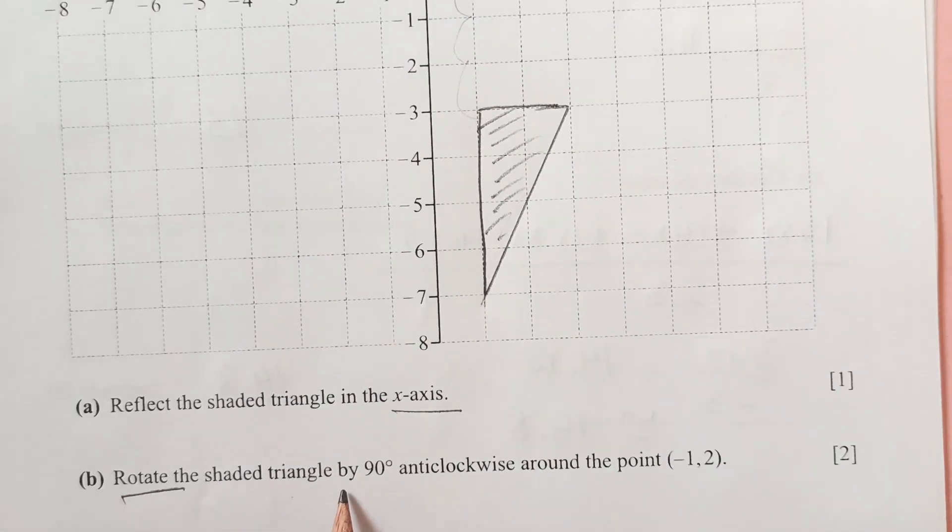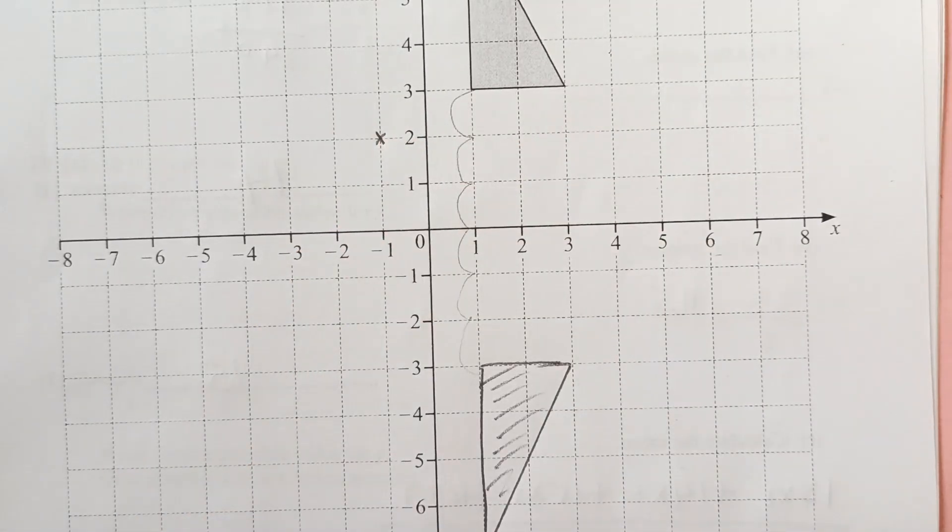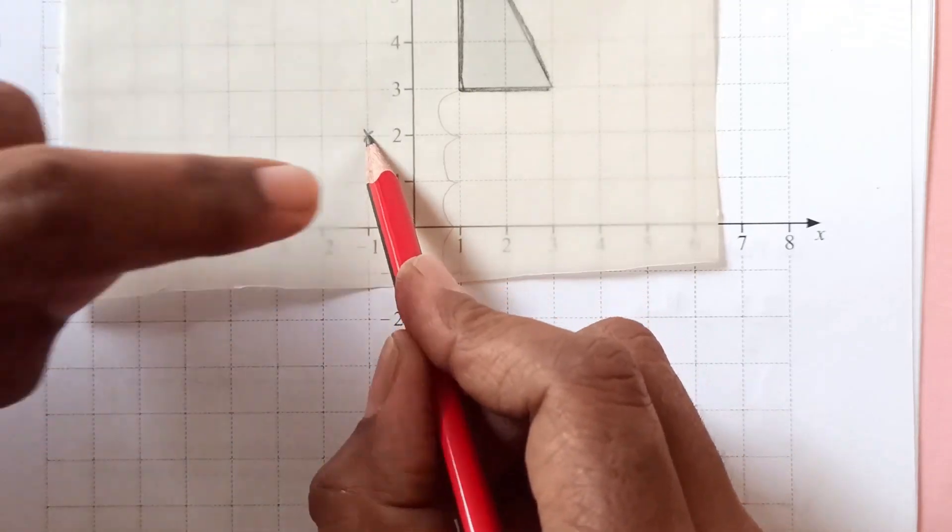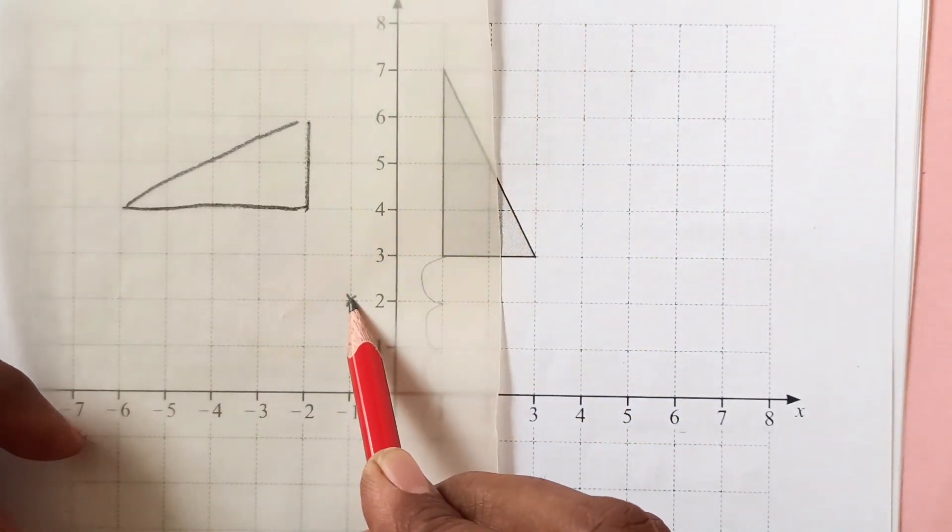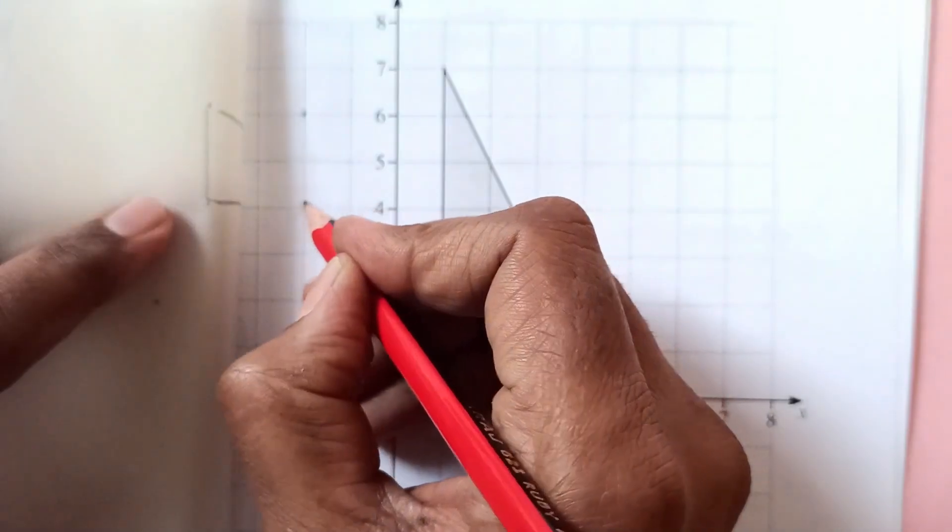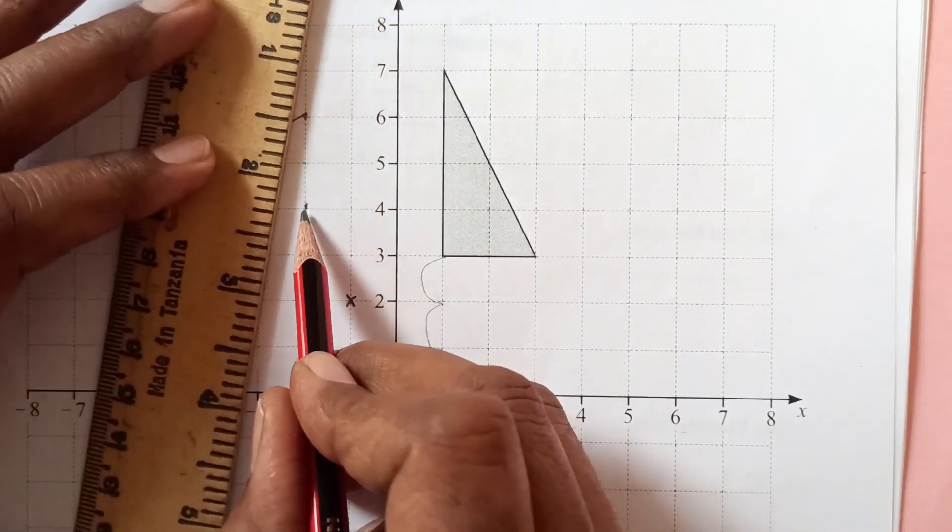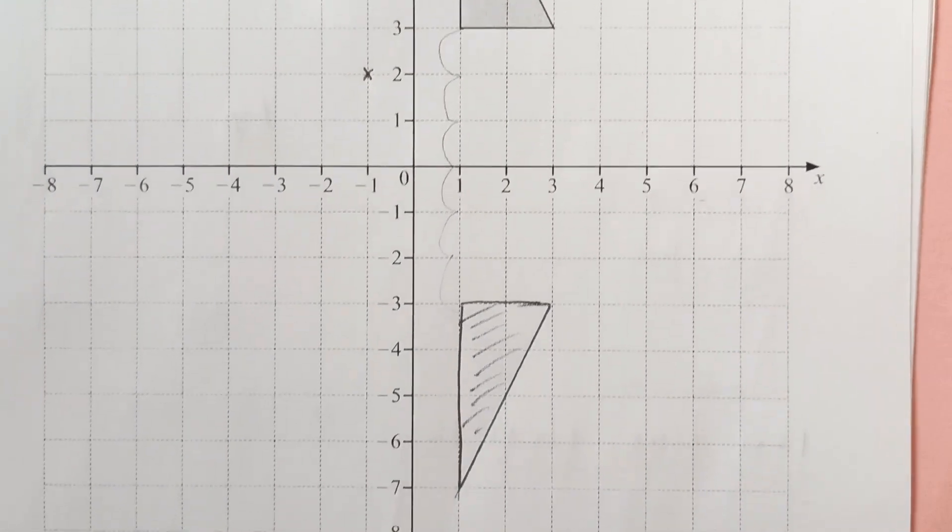Now, rotate the shaded triangle by 90 degrees anti-clockwise around the point negative 1 and 2. Center is negative 1 and 2. This is the center. From here, we are going to rotate this shaded triangle. Let me just draw it here. You can do it easily with tracing paper. Now, 90 degrees. You see, this is a squared cut here. 90 degrees anti-clockwise. Anti-clockwise is this side. So it will come over here. Just take these points here, then you can join it. That's how you can complete this question.